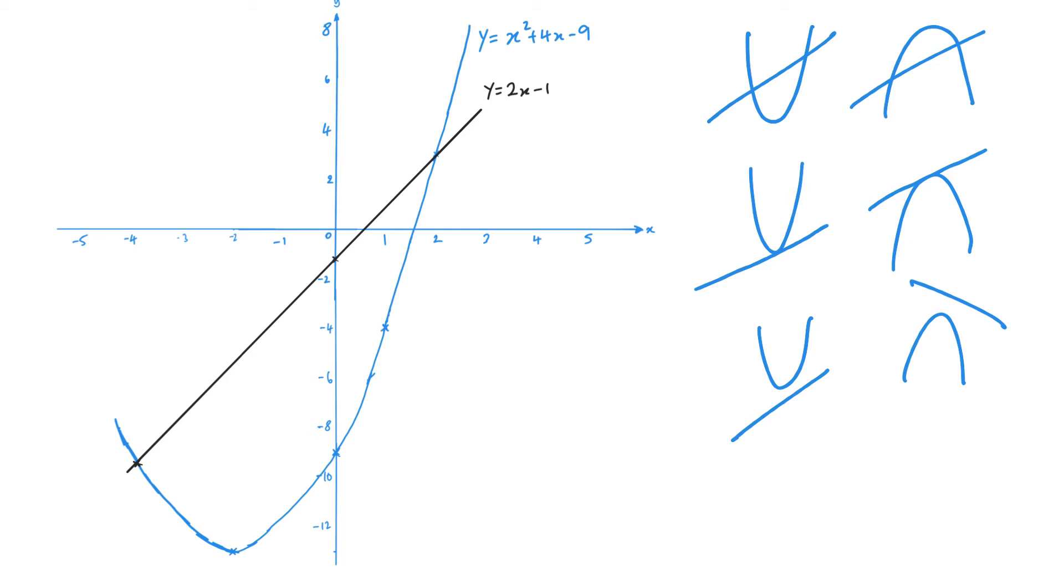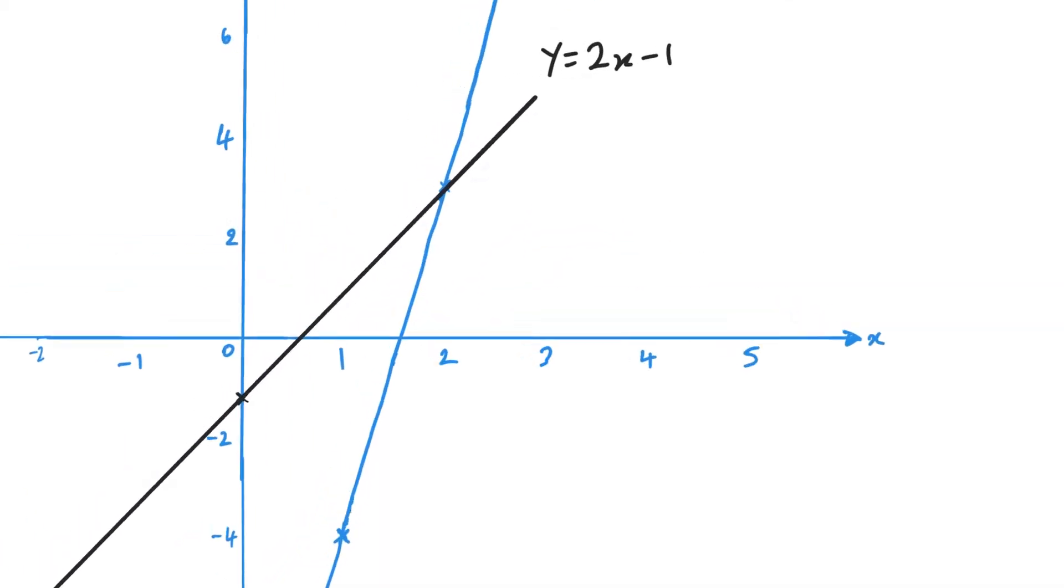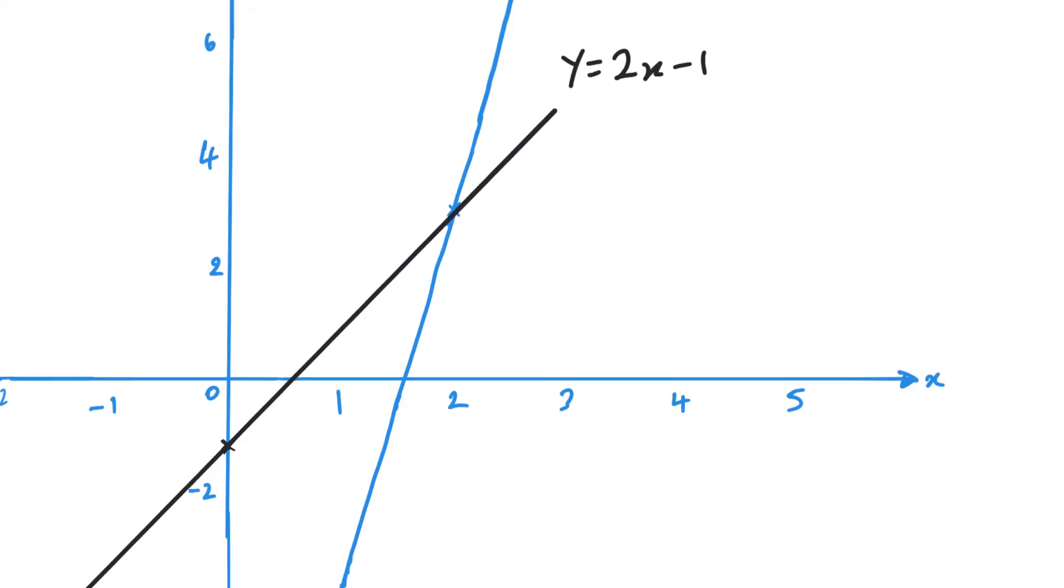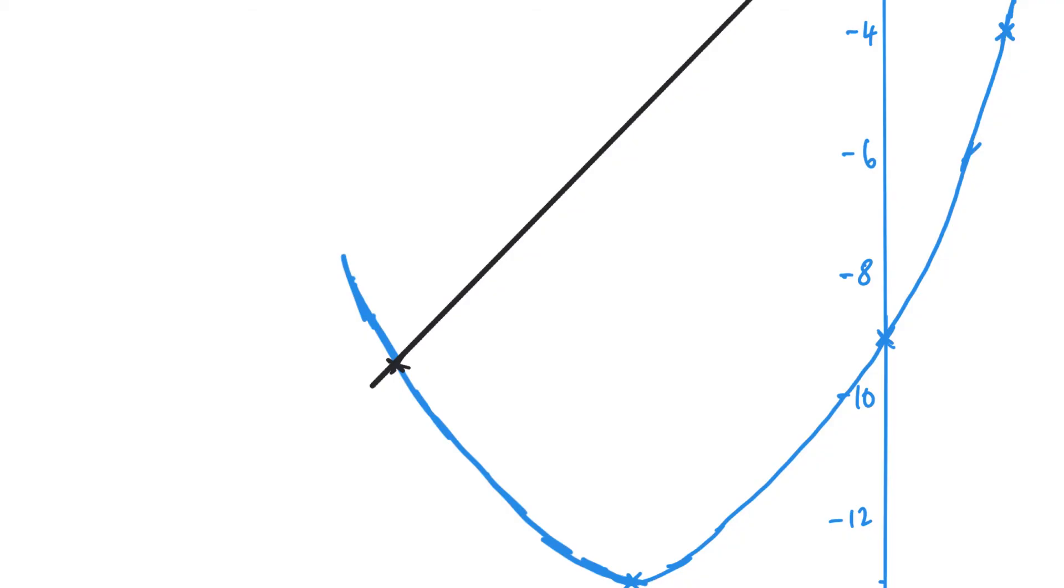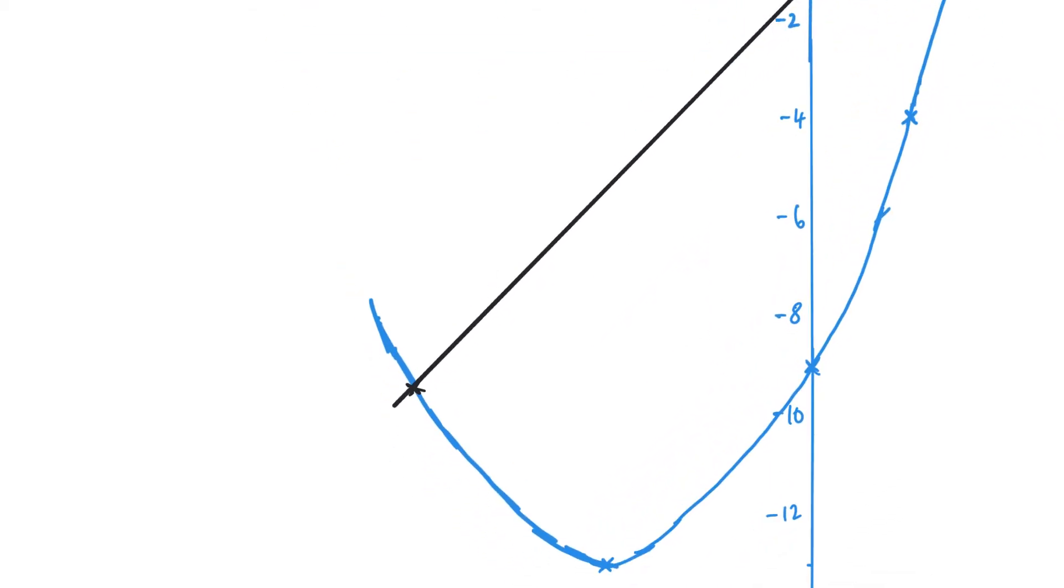We've got two points of intersection here. If I look carefully at my graph, you can see that this point is roughly (2, 3), and down the bottom here we're looking at approximately (-4, -9).